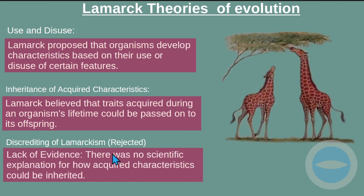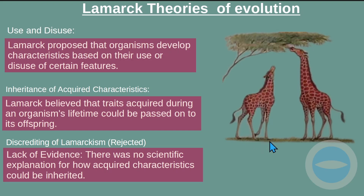Lamarck's theory was rejected. The reason it was rejected is lack of evidence. Even as he was explaining the theory, he didn't show any scientific evidence. There was no scientific explanation for how acquired characteristics could be inherited. He didn't come up with a scientific reason to explain why acquired traits could be passed to offspring, and that is why his theory was rejected.